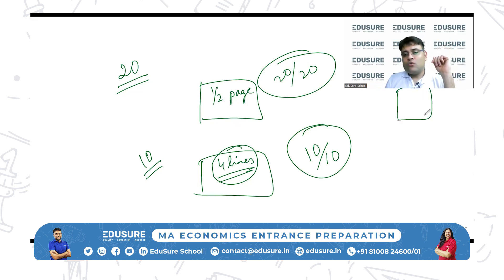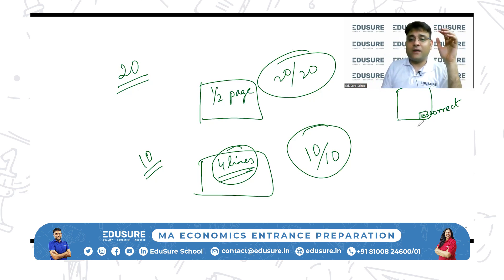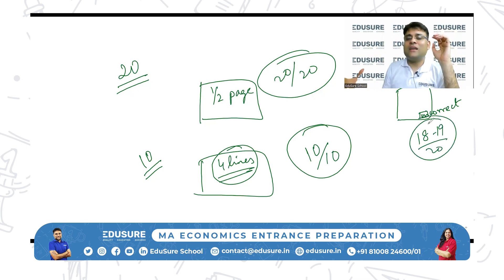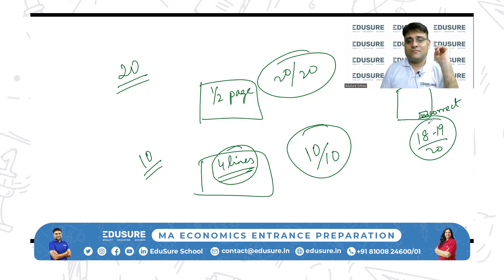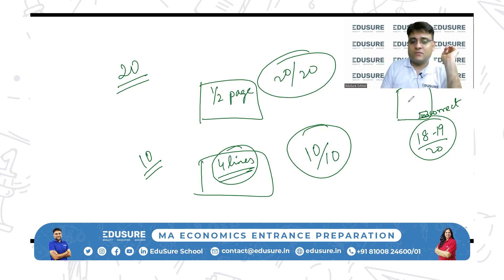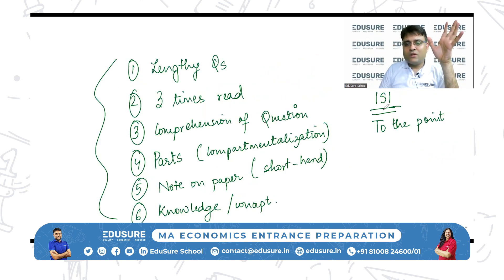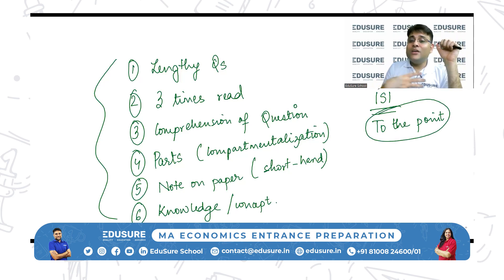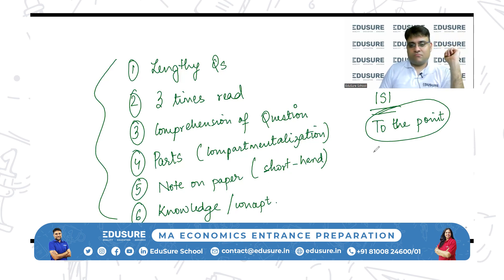In those four lines, the examiner has to be convinced that you know the entire concept. If the examiner understands that you have grasped the concept, they will give you 10 out of 10 or 20 out of 20. If your entire process is correct but only the final answer has a silly mistake, you will get 18 or 19 — full step marking. They are more concerned with your approach than the actual end answer. If your approach is impeccable, they might even give you 19.5 or a full 20 out of 20.